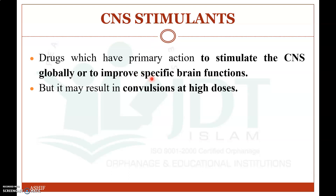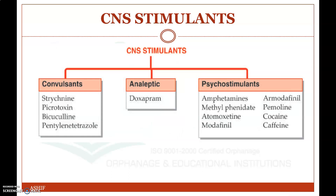CNS stimulants are drugs that may result in convulsions at higher doses, acting as excitatory neurotransmitters. CNS stimulants are classified mainly into: drugs which produce convulsions, analeptics which enhance respiration, and psychostimulants. Examples of convulsants are strychnine, picrotoxin, bicuculine, and pentylenetetrazole.